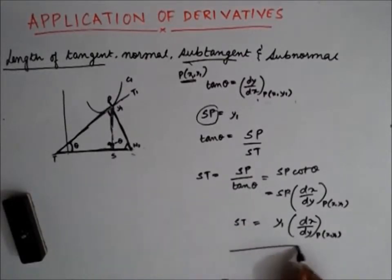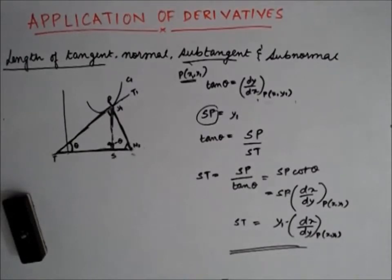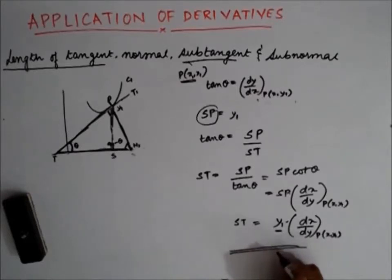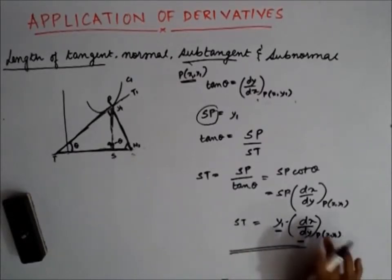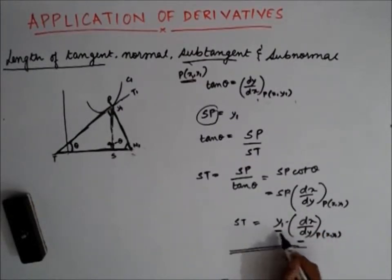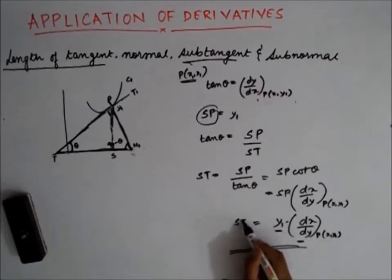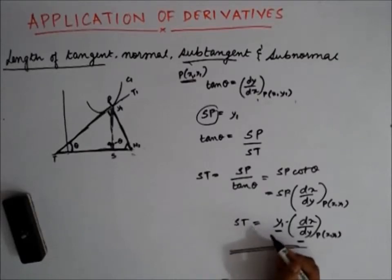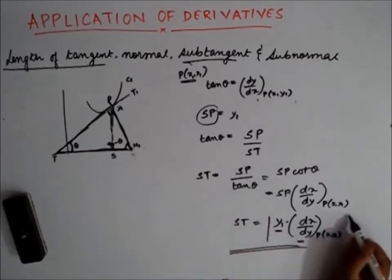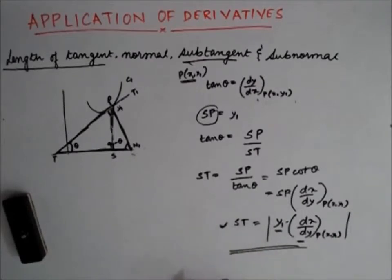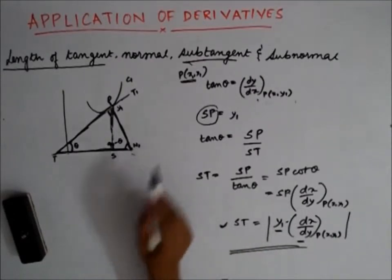Is the formula ST = y1 · (dx/dy) correct? The answer is no, because y1 can be negative and dx/dy can also be negative. If only one of them is negative, ST becomes negative — but ST is a length and cannot be negative. So to handle that, we put a mod sign. The proper formula for the length of subtangent is ST = |y1 · (dx/dy)|.